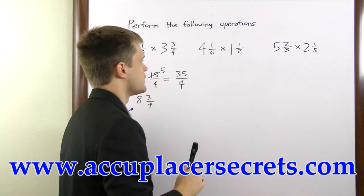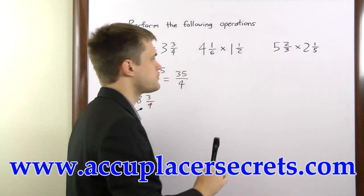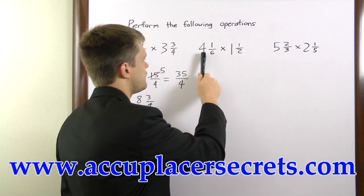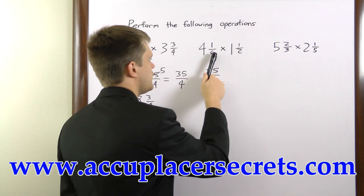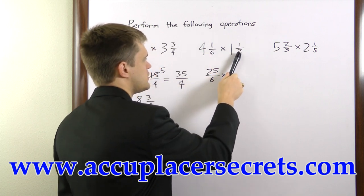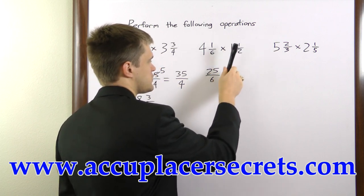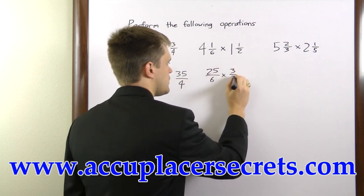In the second example, we have 4 and 1/6 times 1 and 1/2. 6 times 4 is 24, plus 1 is 25, so we have 25/6 times 2 times 1 is 2, plus 1 is 3, 3/2.